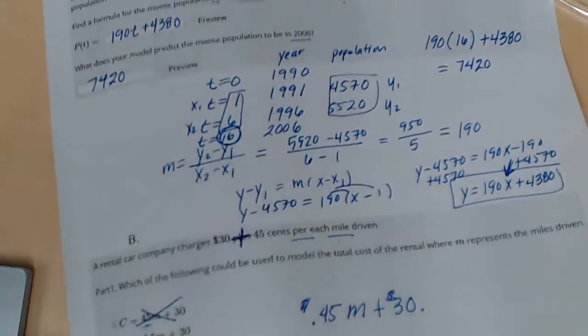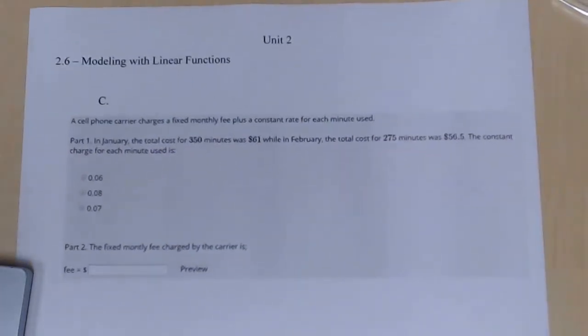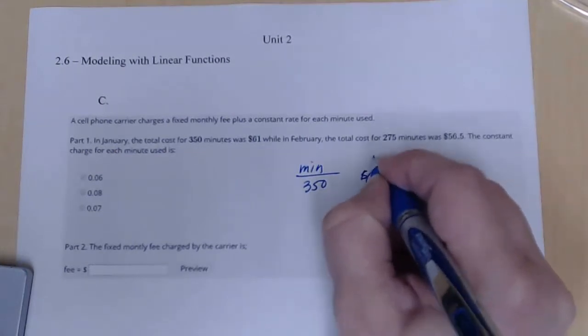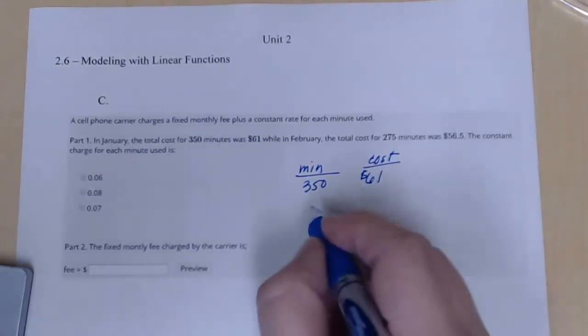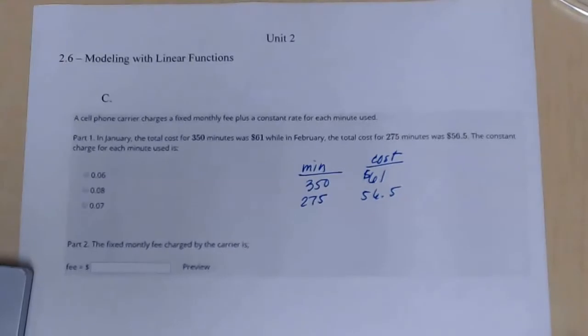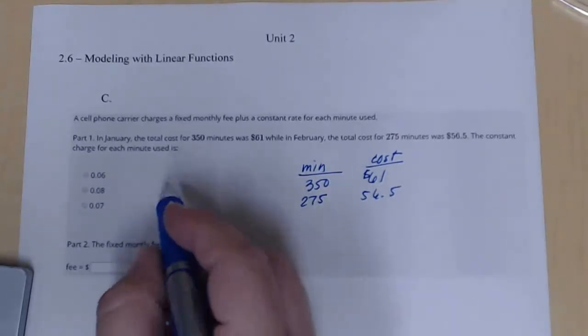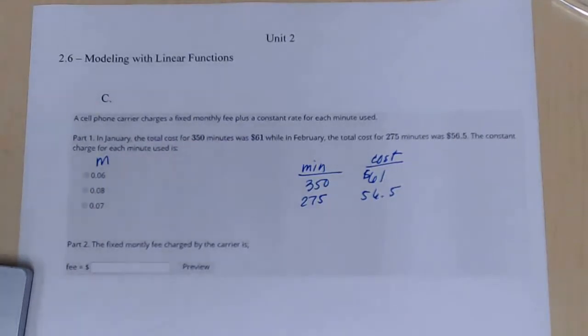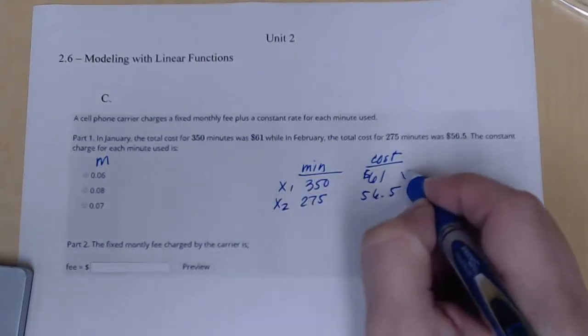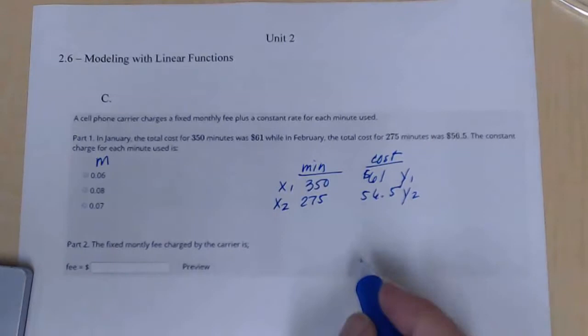One more problem. A cell phone carrier charges a fixed monthly fee plus a constant rate for each minute's use. In January, the total cost for 350 minutes. So let's just kind of make a table of what we know. 350 minutes was $61. So this is my cost minute. The total cost for 275 minutes was $56.50. The constant charge for each minute used is... So we're looking for our slope. So I'm going to use the two pieces of information like their coordinates. So this would be my X1, X2, Y1, Y2. Then we're going to work from there.